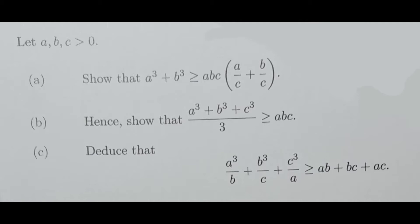But what I'll probably do is tackle each of these in separate videos, because I think each of these results are worth looking at in and of themselves. So, for all of them, we all start with the starting point of letting a, b, and c be greater than zero. And then part a says to show that a cubed plus b cubed will be greater than or equal to abc times a on c plus b on c. So what I'll do in this video is tackle this first part a, and then we'll take a look at part b and part c in follow-on videos.